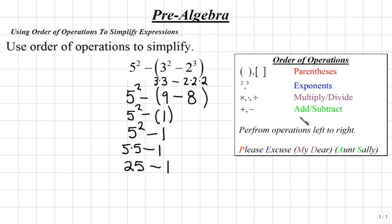Next, using order of operations, we see that we have 25 minus 1, which becomes 24 as our final answer. So, 5 squared minus the quantity of 3 squared minus 2 cubed becomes 24.